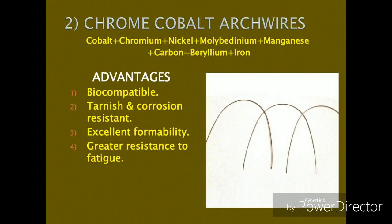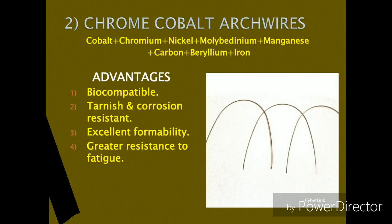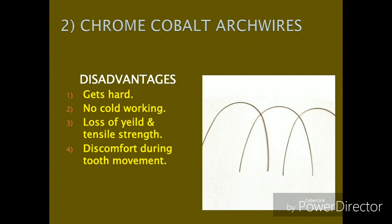The chrome cobalt arch wires are biocompatible, with excellent resistance to tarnish and corrosion. In their non-heat-treated form, they have excellent formability, meaning they can be easily twisted and turned according to the application. Because of their high resiliency, chrome cobalt arch wires have high resistance to fatigue and distortion.